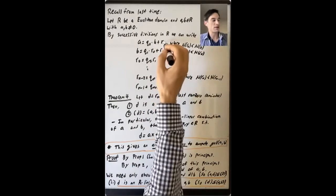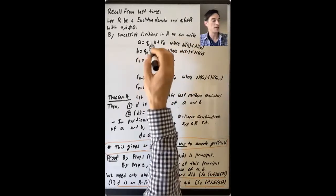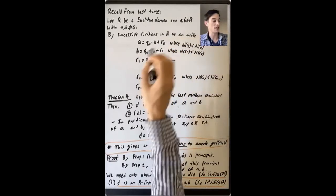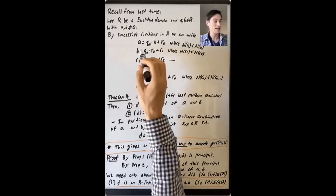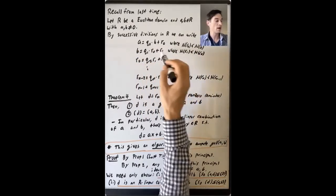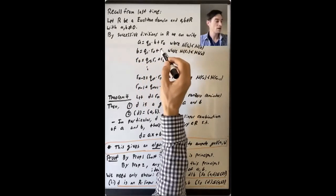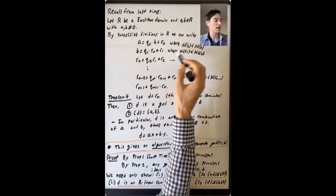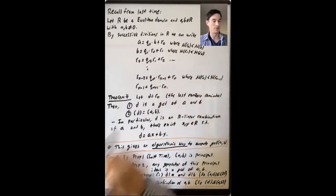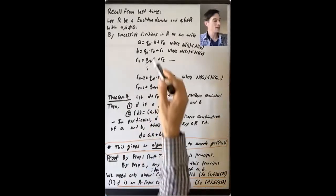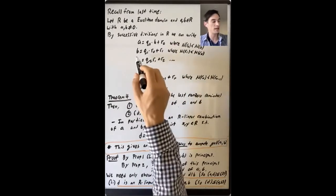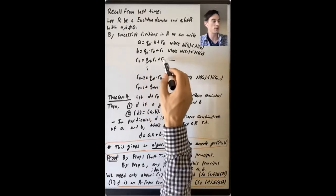Suppose that R0 is not zero. Then we can apply the division algorithm to B and R0, and write B equals Q1·R0 plus R1, where maybe R1 is zero, but if not, the norm of R1 is less than the norm of R0. Then we can apply the division algorithm again to R0 and R1 and get R0 equals Q2·R1 plus R2.